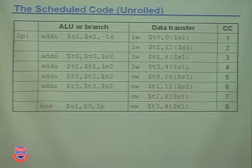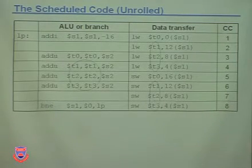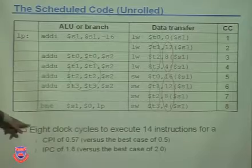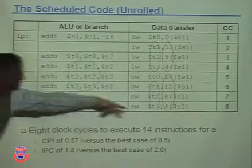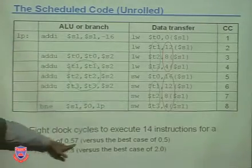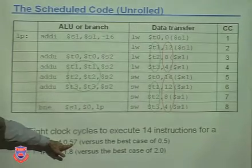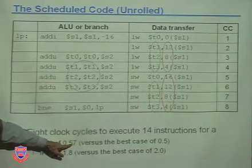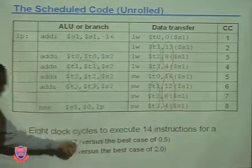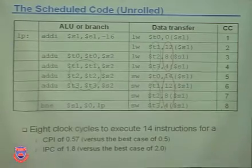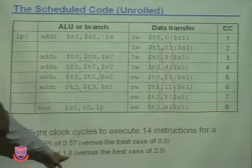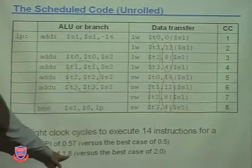Let's do a quick analysis. Eight clock cycles to execute 14 instructions, giving me a CPI of almost 0.5. The IPC is almost 2.0. We did very well. The compiler did very well.